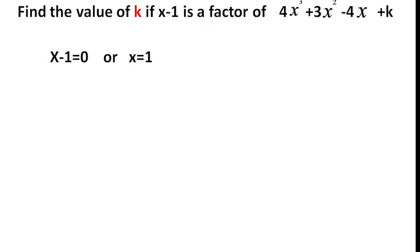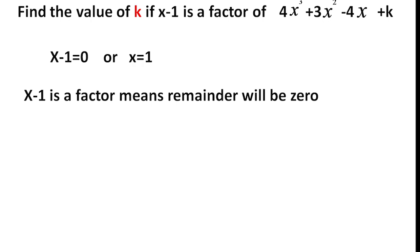Since x minus 1 is a factor, the remainder will be 0. That means P of 1 will equal 0. We know the zero of the divisor is 1, and we substitute that value into the given polynomial — the dividend. So P of 1 equals 0 because x minus 1 is a factor.